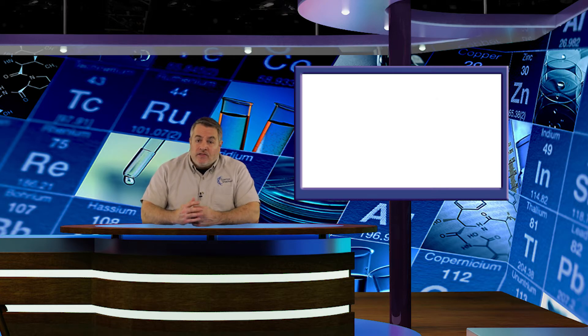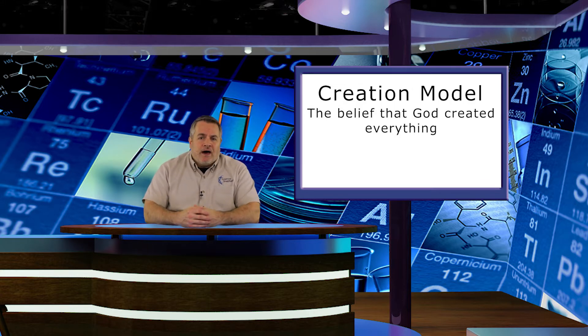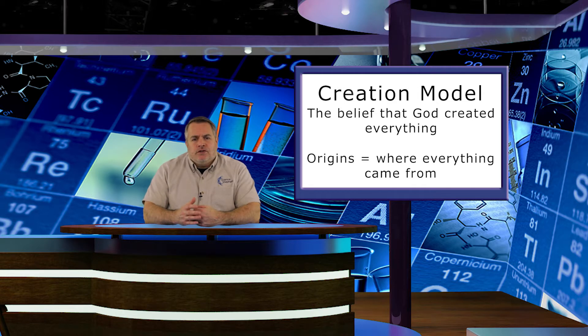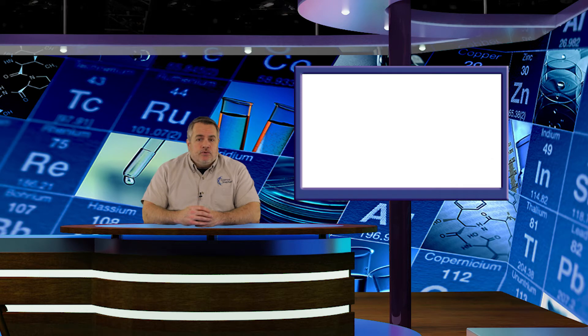So, before God said, let there be light, there was only God. Then in six days, He created the universe and everything in it. People who believe that God created the universe and everything in it, just like the Bible describes, believe in creation or the creation model of origins. Origins just means where everything came from. So, scientists that believe that God created everything by speaking the words, let there be, just like Genesis says. But there's another way that people use to explain origins, or where everything in the universe came from.